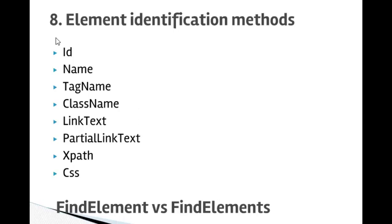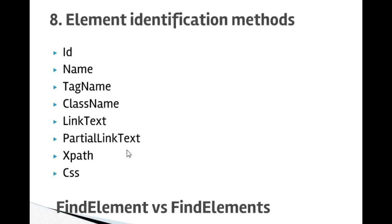There are eight ways to identify elements in Selenium: by using the ID, name, tag name, class name, link text, partial link text, and finally XPath and CSS locators. XPath and CSS selectors will be covered in the next lecture.